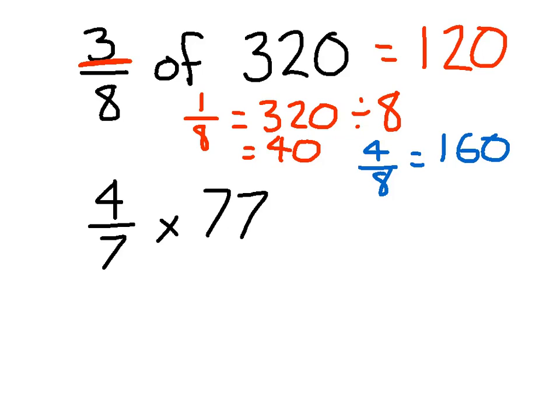OK, the one at the bottom: 4/7 of 77, or written this way, 4/7 times 77, means exactly the same thing. So again, 1/7 of 77 equals 77 divided by 7 equals 11.